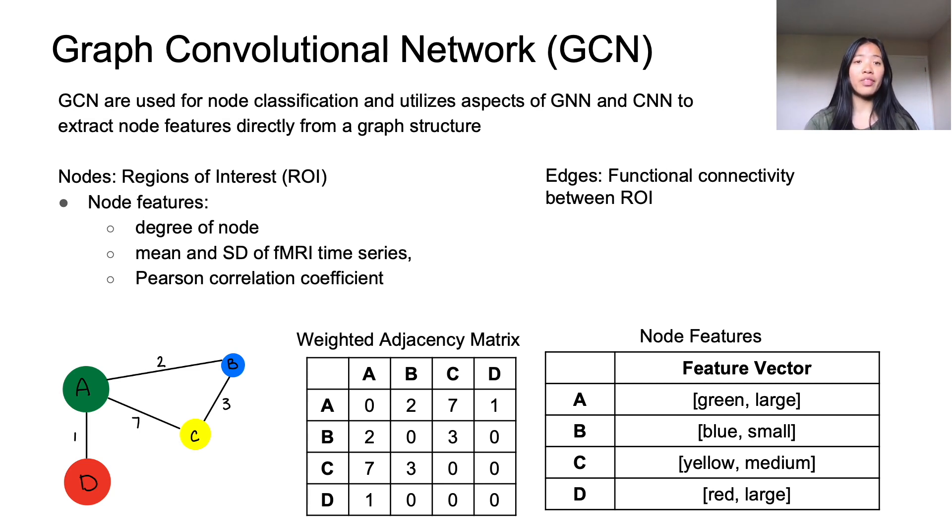So if we look at this example at the bottom, node A has a weighted edge connected to B, C, and D of values 2, 7, and 1, and these are reflected in the adjacency matrix.